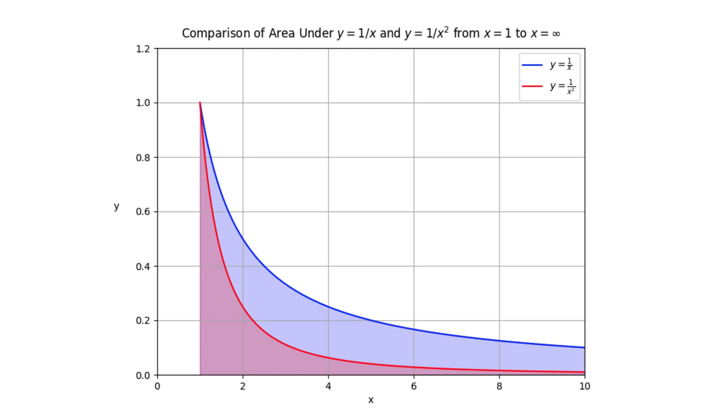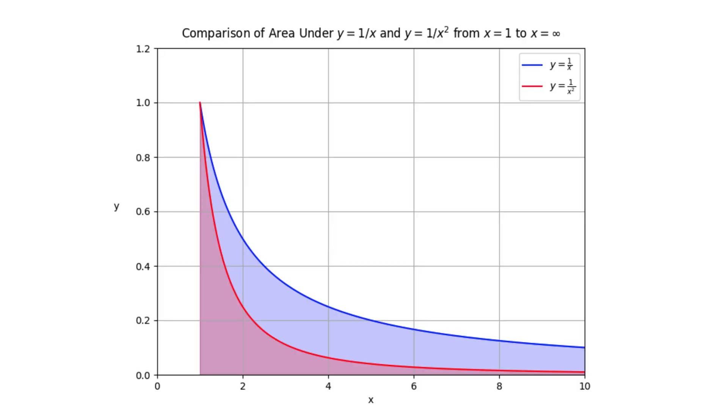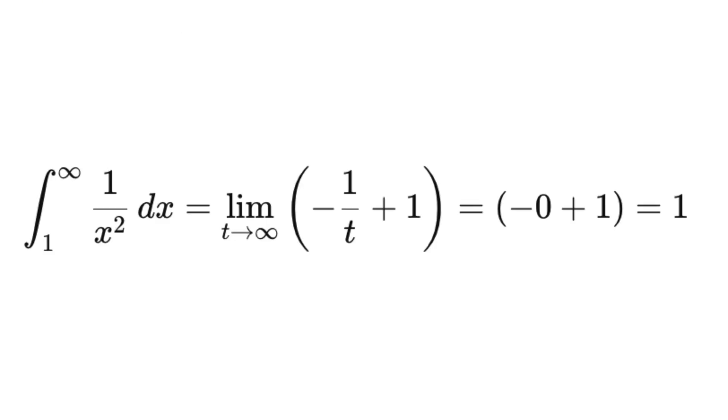We can compute the area under y equals 1 over x as the following. Since natural log t grows indefinitely, the area diverges, meaning the region under y equals 1 over x has infinite area.